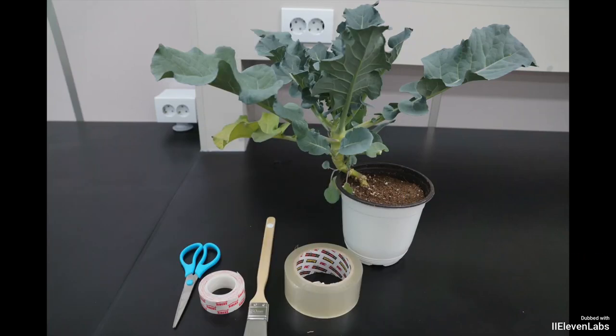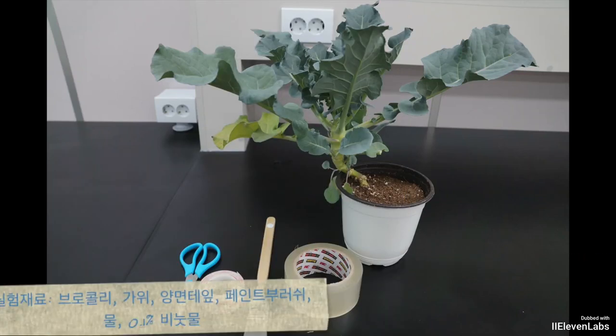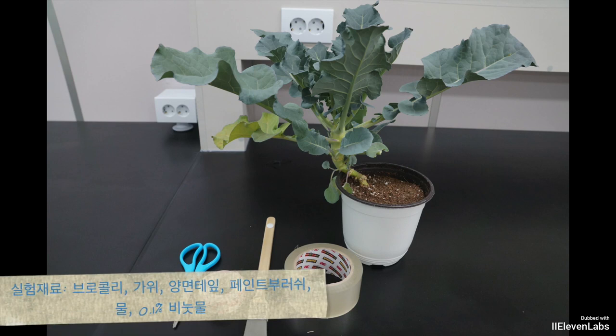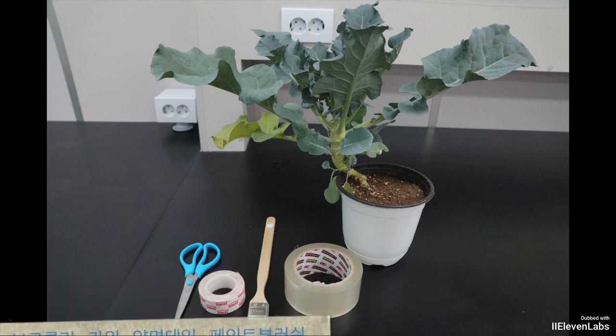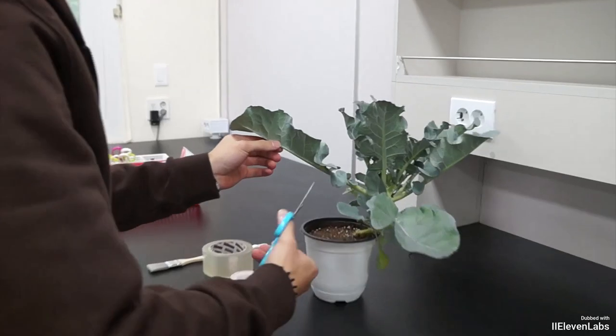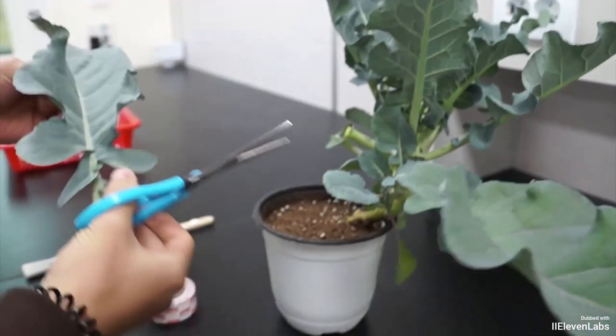Now I will guide you through the materials needed for the experiment. First you will need broccoli leaves, scissors, double-sided tape, a paintbrush, soap water, and a flat desk.